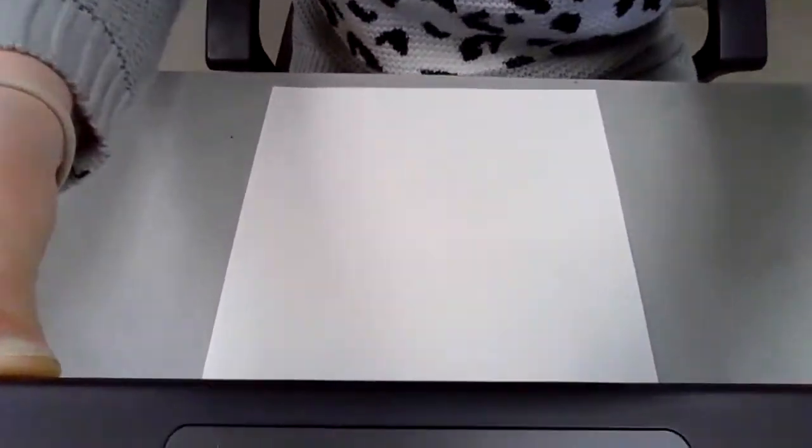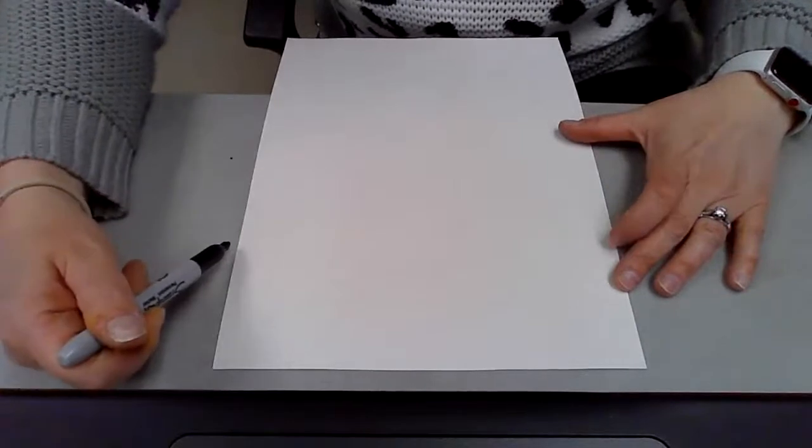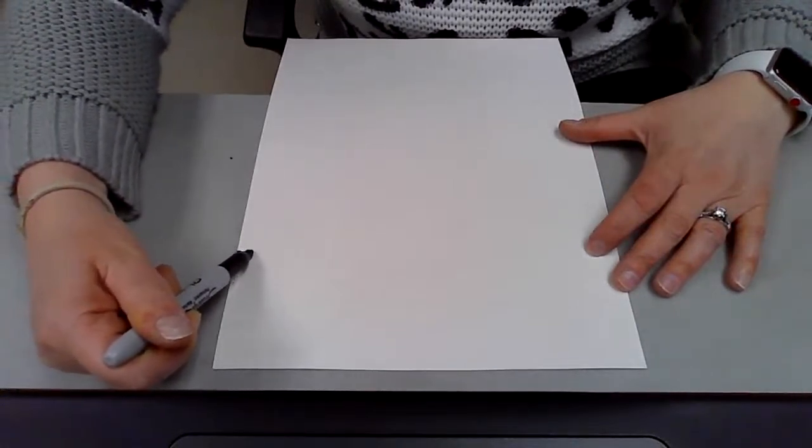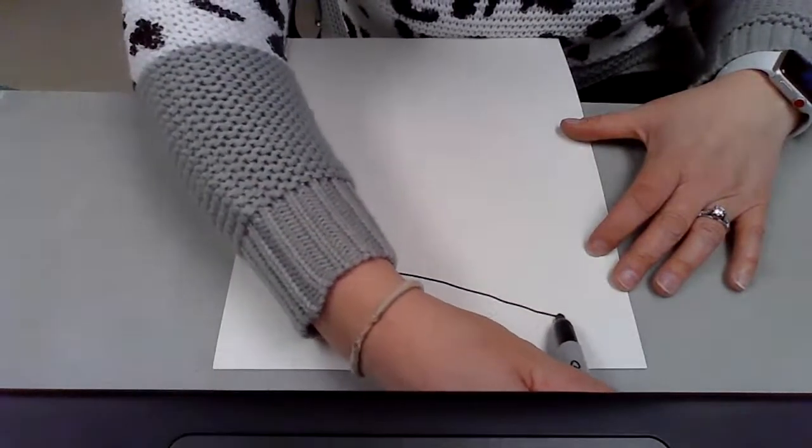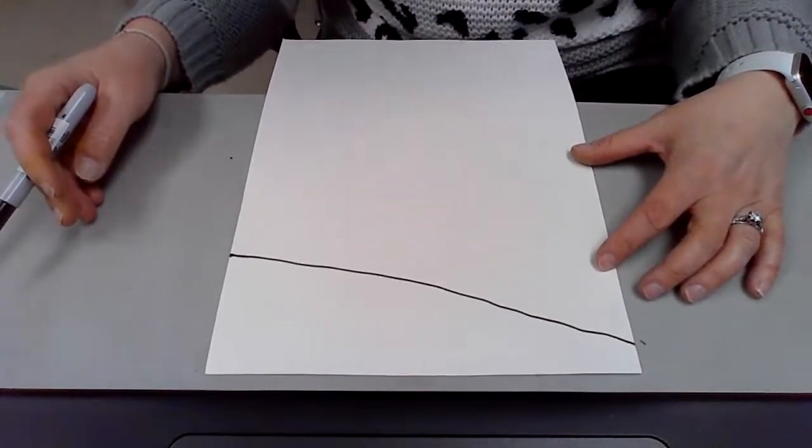Let's get started here. So the first thing that we looked at for this project, we wanted to make sure we had our lines for our foreground, middle ground, and background. So I'm going to start about a quarter of the way up my paper and I'm going to bring a line down to near the front of my paper at a slight slant.